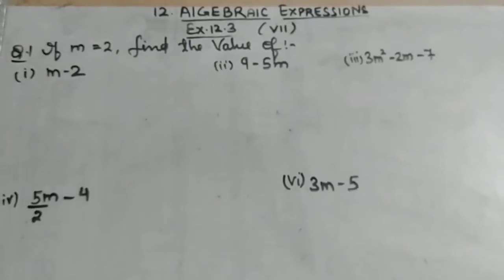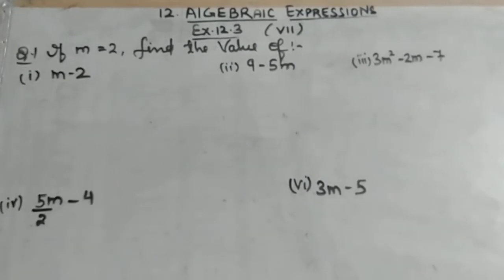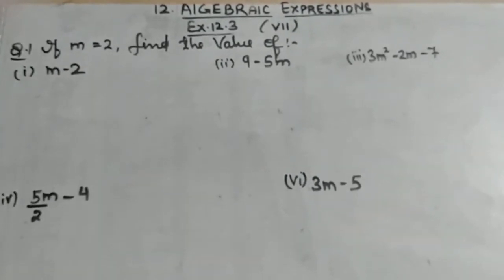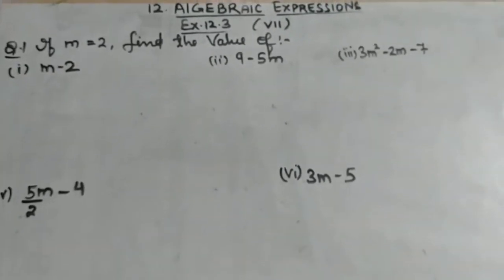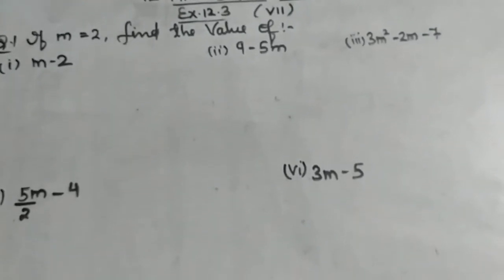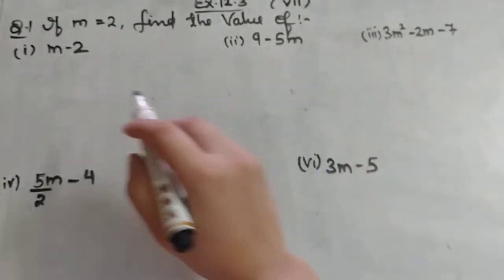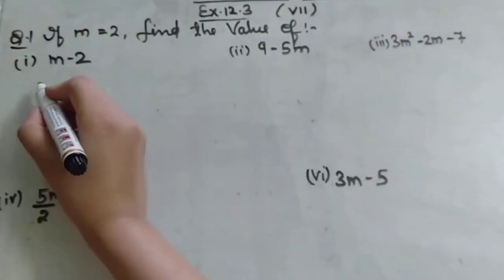Hello everyone, welcome to my channel NCERT Learning Hub. Today we are going to solve question number one from Exercise 12.3. The question is: if m equals to 2, find the value of m. We have to keep the value in equations and then solve them. First we are given m minus 2.